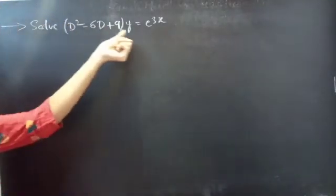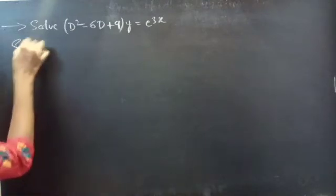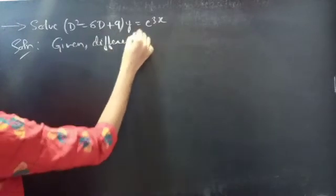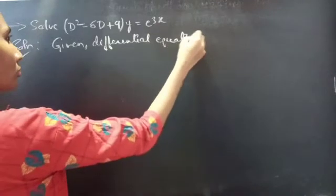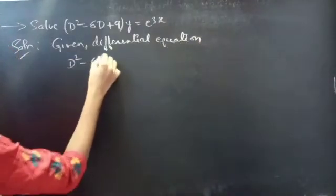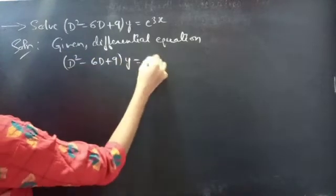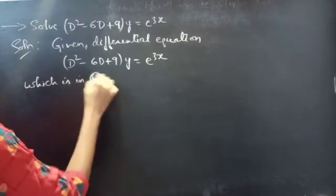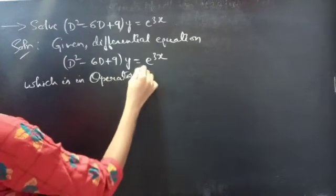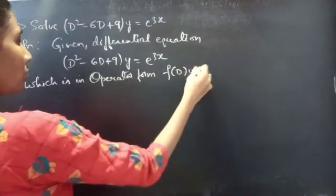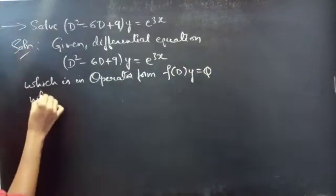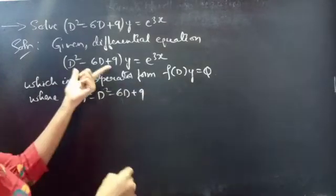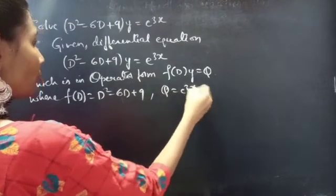Problem: solve (D² - 6D + 9)y = e^(3x). Given differential equation: D² - 6D + 9 into y equals e^(3x), which is in operator form f(D)·y = Q, where f(D) = D² - 6D + 9 and Q = e^(3x).